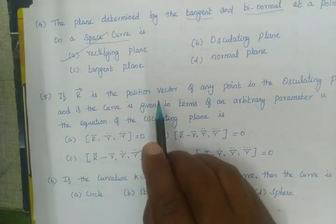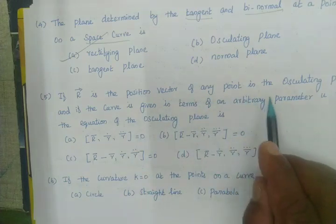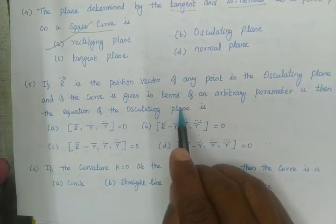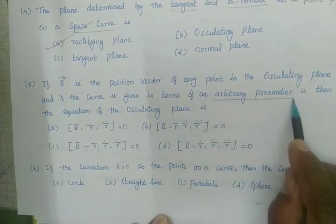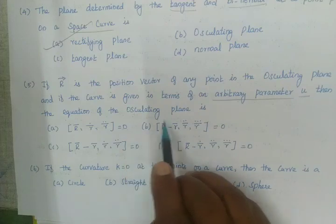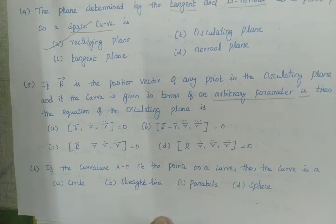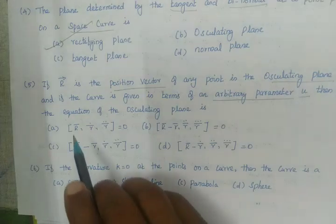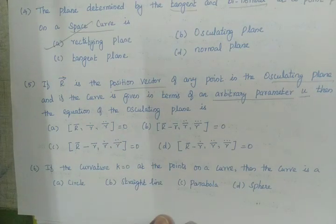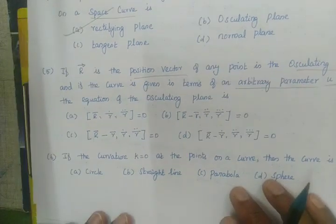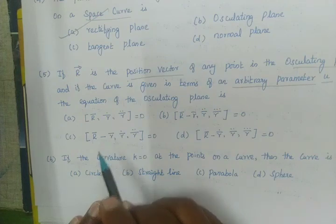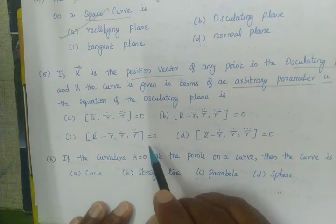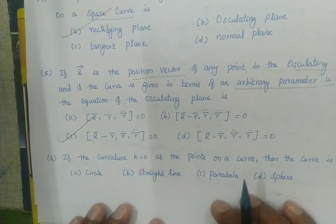If R vector is the position vector of any point in the osculating plane, and if the curve is given in terms of an arbitrary parameter u, then the equation of the osculating plane is: (R vector minus r vector), R single dot, and R double dot equal to 0. This is the equation of the osculating plane.